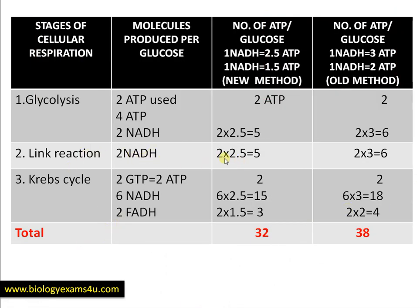Calculating totals: Link reaction — 2 NADH = 2 × 2.5 = 5 (new) or 2 × 3 = 6 (old). Krebs cycle — 2 GTP = 2 ATP; 6 NADH = 6 × 2.5 = 15 (new) or 6 × 3 = 18 (old); 2 FADH2 = 2 × 1.5 = 3 (new) or 2 × 2 = 4 (old). Adding everything up, the theoretical yield per glucose is 32 ATP as per the new method, or 38 ATP as per the old method. Some textbooks give 36 because the 2 cytoplasmic NADH from glycolysis require 2 ATP for mitochondrial transport, so 38 − 2 = 36.